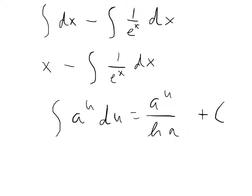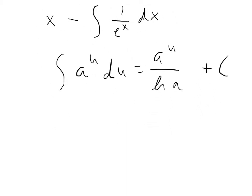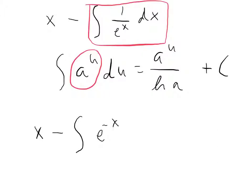So for this problem, what we're going to do here is that we're going to write this integral in terms of, we can just have it of a to the u. So what we're going to have to do there is that we're going to have to get rid of that fraction, and that's pretty easy because what we're going to do is just use some of our algebra rules, and we're going to call this x minus the integral of e to the negative x dx.